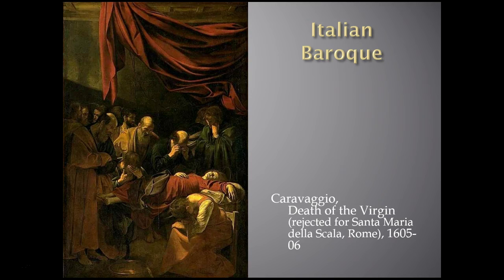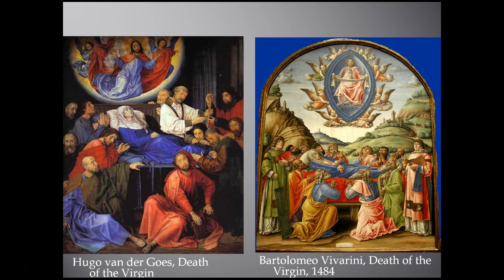Other earlier depictions of this scene — from the Renaissance and Hugo van der Goes from the Northern Renaissance — show that Caravaggio really deviated from earlier paintings of these subjects. In earlier versions, the Virgin is typically laid out in the center where she signals a telepathic communication and disciples immediately come and surround her; Christ then comes down to carry her soul to heaven. The body is organized and composed, hands crossing the chest — a very idealized presentation of the deceased Mary.